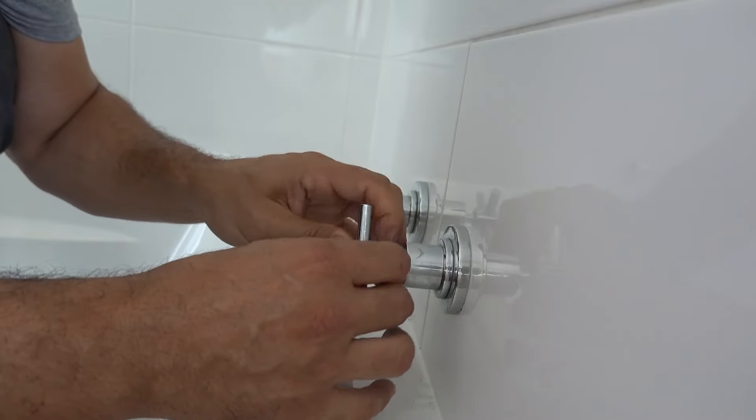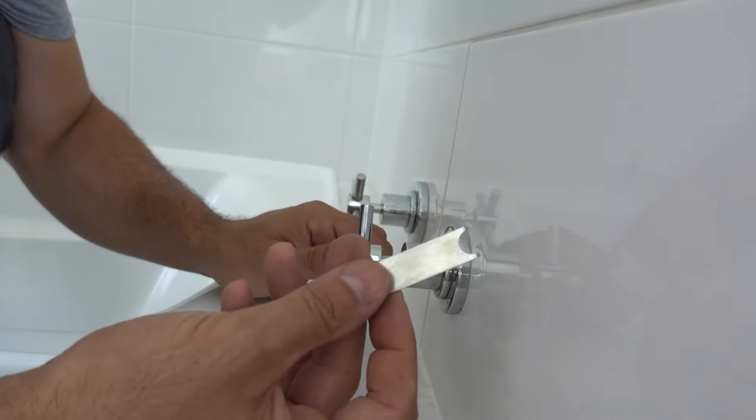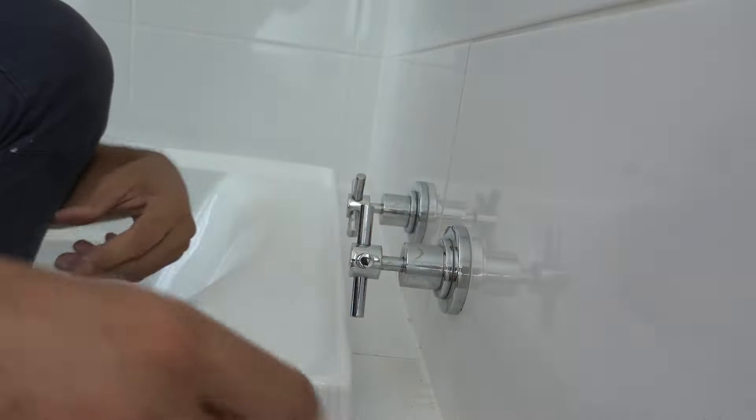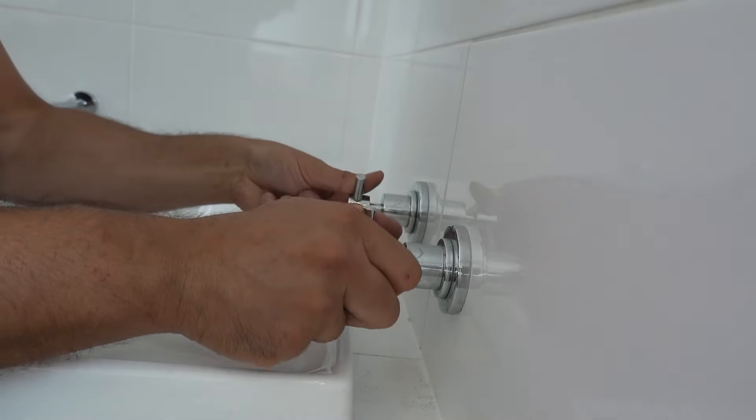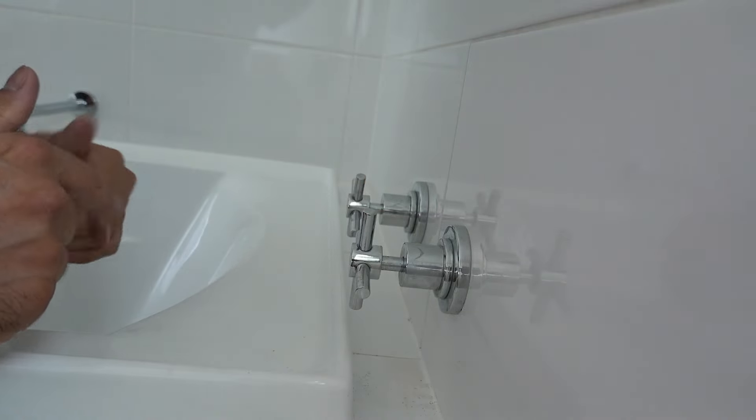Once you've got that one there in as much as possible, we're going to follow on with our little tool here. Alright, so once that's on, we can now close our taps back up, switch on the water, and make sure that this is no longer dripping.